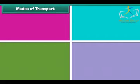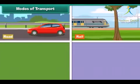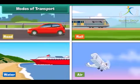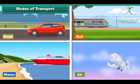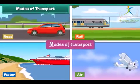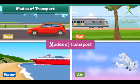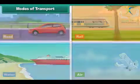Modes of transport: Goods, animals and people can be transported by road, rail, water or air. Different mediums used for transportation are known as the modes of transport. Modes of transport can be broadly divided into three categories.